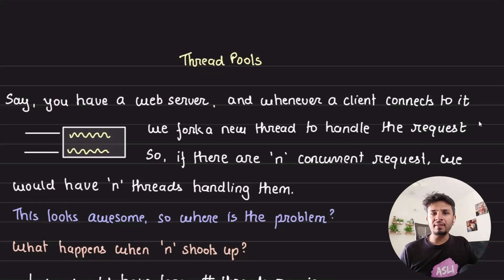Say we have a web server and whenever a client connects to it we fork a new thread to handle that particular request. If we have n concurrent requests being handled, we would have at least n threads running to handle n requests.